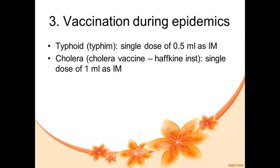Vaccination during epidemics: during a typhoid epidemic, a single dose of 0.5 ml IM of typhoid vaccine can be given. During a cholera epidemic, a cholera vaccine — Haffkine's instant — single dose of 1 ml IM can be given.